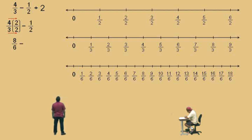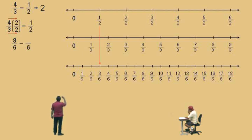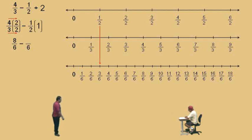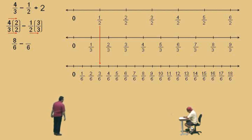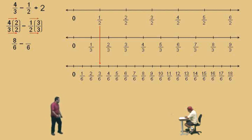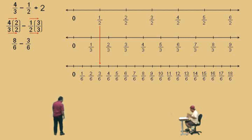Now we're going to subtract 1 half. 1 half is what fraction, Charlie? 3 sixths. Again, same process — how do we write 1 half with a denominator of 6? We've got to multiply 1 half by 1. The way we do this is: 2 times what is 6? 3. But if I multiply the bottom number by 3, the top number has to be multiplied by 3 also. Essentially, you're taking 1 half and multiplying by 1, but it's 3 over 3. Straight across the top and straight across the bottom. What's 1 times 3? 3. And 2 times 3 is 6. There you go.